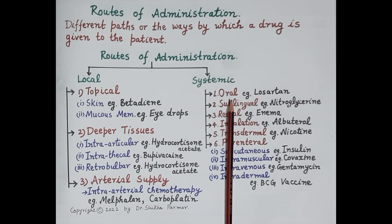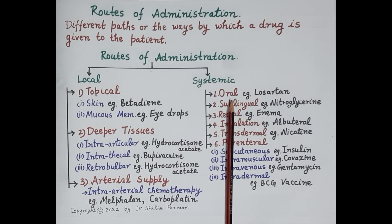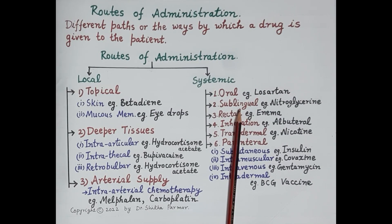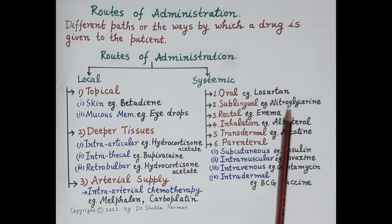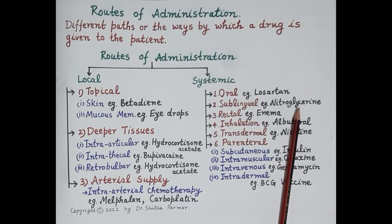A major disadvantage of the oral route is first-pass metabolism — the drug is metabolized in the liver or gut before reaching blood circulation, so the dose must be designed accordingly. The second route is the sublingual or buccal route, where the tablet is placed under the tongue and the drug is absorbed from the mucous membrane of the mouth into the blood, bypassing the liver. The drug must be lipid soluble. A good example is nitroglycerin sublingual tablets, used for angina.